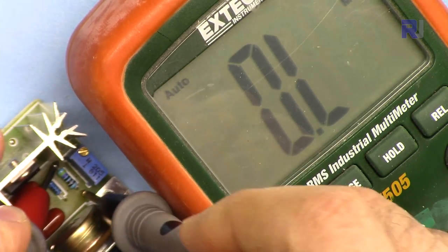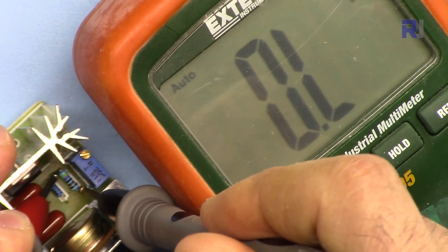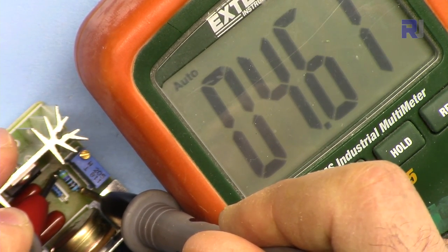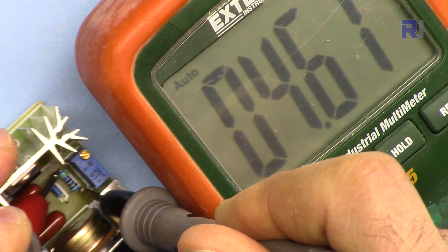So that's 4.6, 4.7 kilo-ohm. And this trimmer is written as 205, that is two zero and five zeros, so that is a two mega-ohm trimmer.